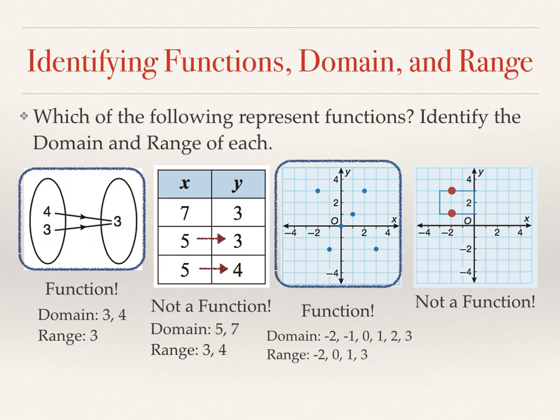And the domain is your x values that are allowed in your continuous curve. It's all x's from negative 3 to 0. Your range is the y values that are allowed. So we're going from 1 to 3.